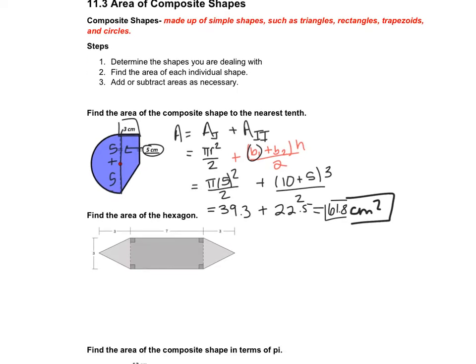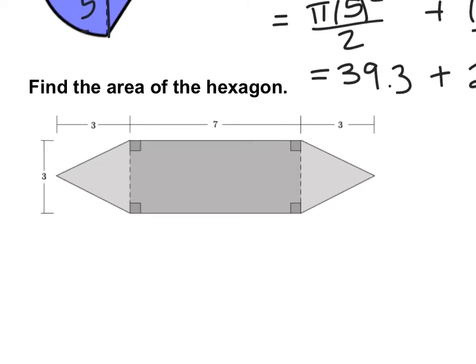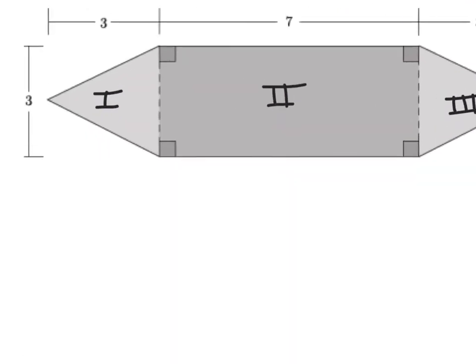For our next example, we're going to find the area of this hexagon. There's an issue. We don't know the hexagon formula because guess what? There isn't one. So if you look, this is made up of a triangle, a rectangle, and another triangle. So my area of this image is going to be composed of this.